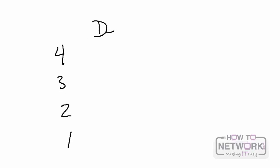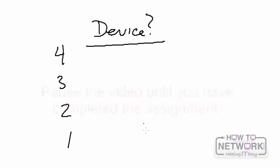Here's your exercise: get a blank piece of paper and write down 1, 2, 3, and 4 vertically, then write down which devices match which layer of the OSI model. Go ahead and do that now.